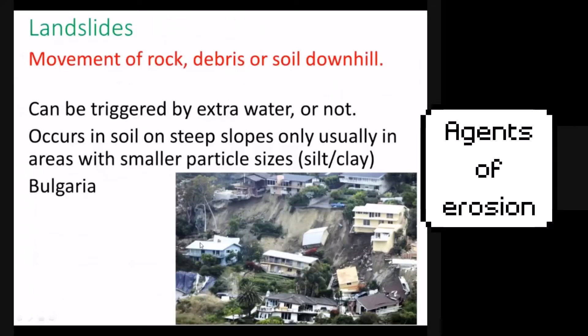Landslides are the movement of rock, debris, and soil downhill. In order to be considered a landslide, it has to have soil in it. Water can help trigger a landslide — it can lubricate the soil underneath, it can add extra weight to the soil, overcoming the soil strength — but it does not specifically require water. Most landslides happen where the soil is made of silt and clay, because silt and clay are weaker than solid rock or sandstone.